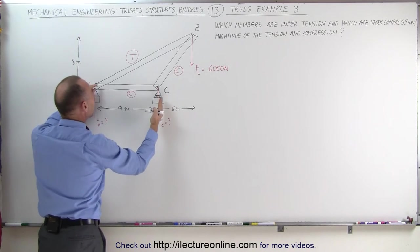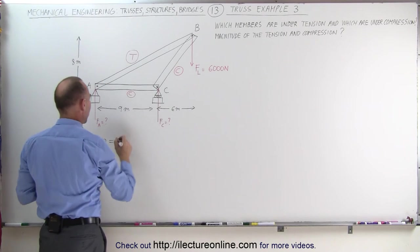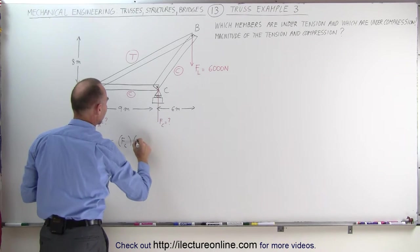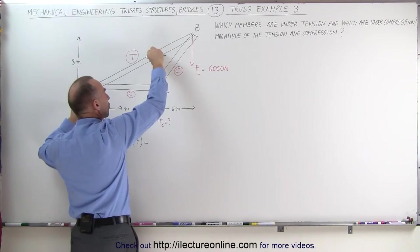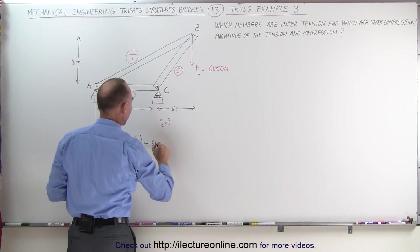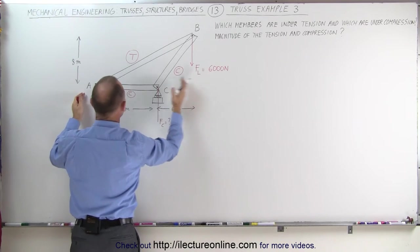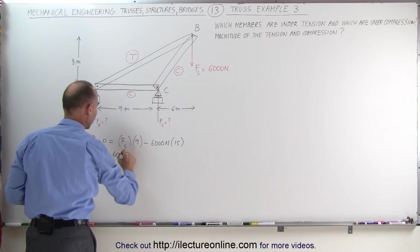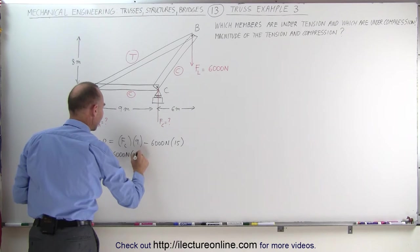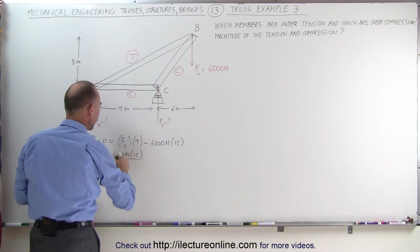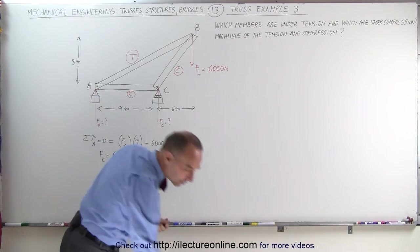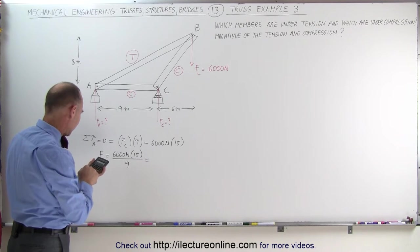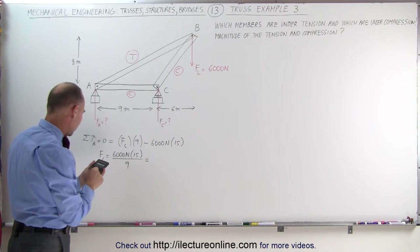This force gives the structure a counterclockwise torque — that's a positive torque. That means F sub C multiplied by the distance from the line of action of the force to the pivot point, which is 9 meters, minus 6,000 Newtons times the distance from here to here, which is 9 plus 6 or 15 meters. F sub C equals 6,000 times 15 divided by 9.